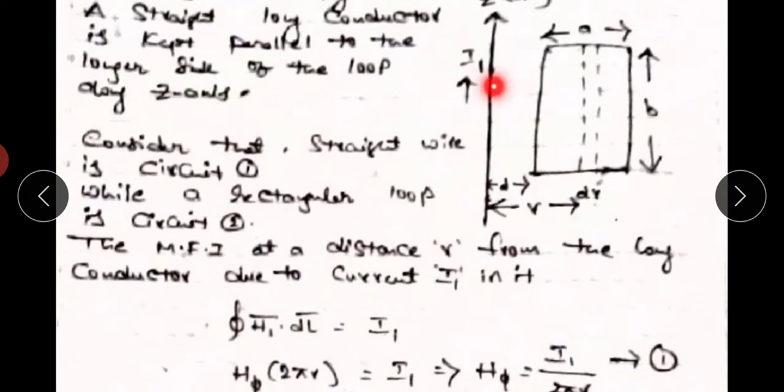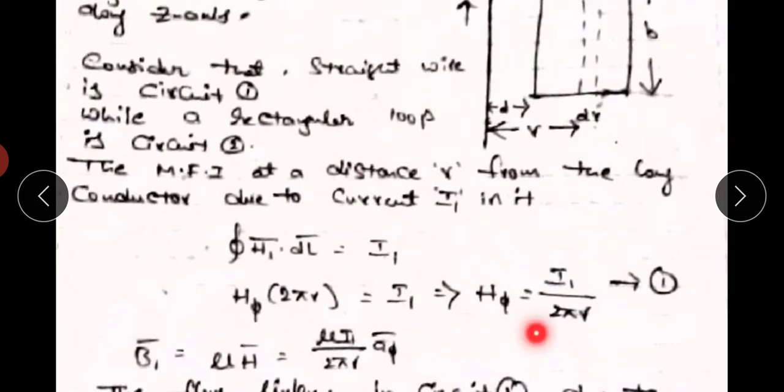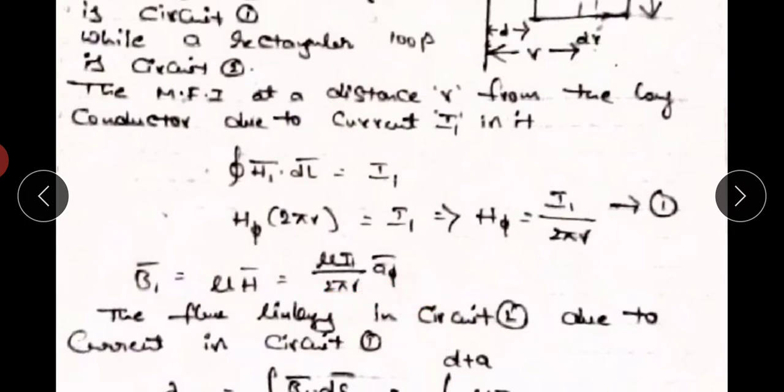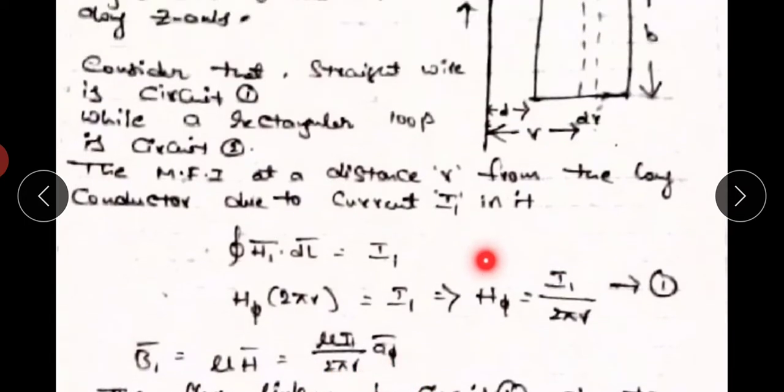We already derived that the magnetic field intensity due to a straight conductor is H = I / 2πR. Here, H₁ = I₁ / 2πR — this is equation number one. The magnetic flux density B̄ = μH̄, so B̄ = μI₁ / 2πR · â_φ.